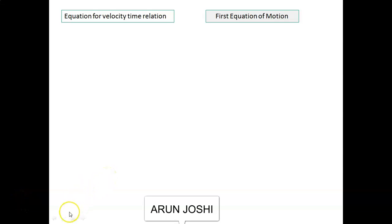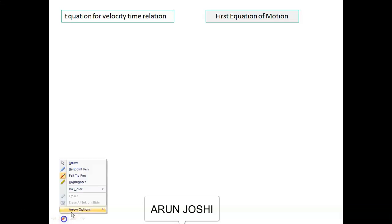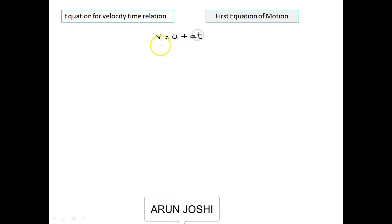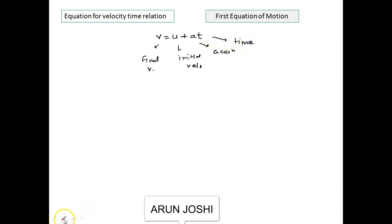Dear students, we are coming to the derivation part. There are three equations of motion in the Class 9 syllabus. The very first equation of motion gives the velocity-time relation. The equation all of you are supposed to learn is v = u + at. Firstly, I will discuss the graphical method, then I will discuss the mathematical analysis also.